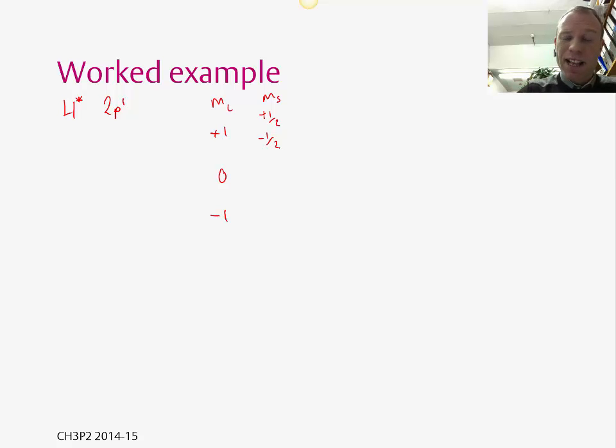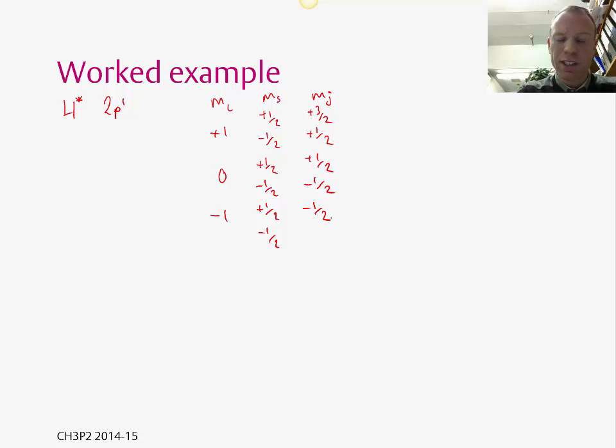If it's in the ML equals 0, then it's the same. So it's plus a half, minus a half. Then we have plus a half and minus a half for ML equals minus 1. Now we can add these up. So this gives us our MJ values. So 1 plus a half is plus 3 upon 2. 1 minus a half is plus a half. 0 plus a half is plus a half. 0 minus a half is minus 1 half. Minus 1 plus a half is minus 1 half. Minus 1 minus a half is minus 3 upon 2.